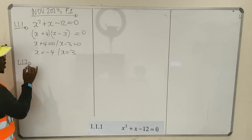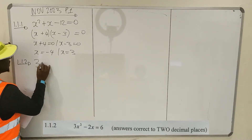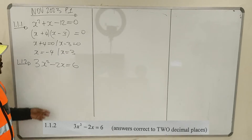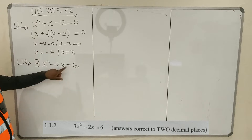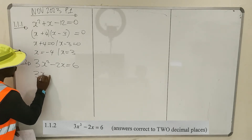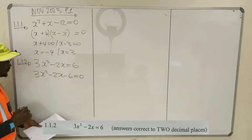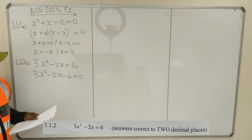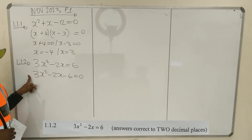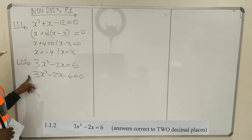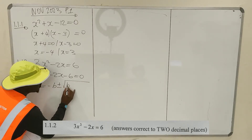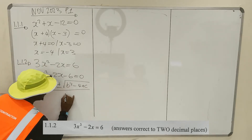Move to the second one, 1.1.2. Straightforward. 3x² minus 2x is equal to 6. It's a quadratic equation, so everything should be on the same side — equal to 0. Transpose the 6 to the left-hand side: 3x² - 2x - 6 = 0. Once you are here, you are also given the hint to correct to two decimal places.